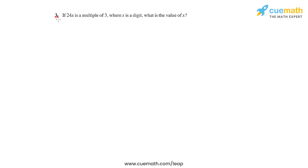In question number three of the second exercise, we have been given a number 24x which is a multiple of three, where x is a digit, and we'll have to find the value of x. To answer this question we'll use the divisibility rule of three, which says that if any number is a multiple of three, then the sum of the digits of that number will definitely be divisible by three.